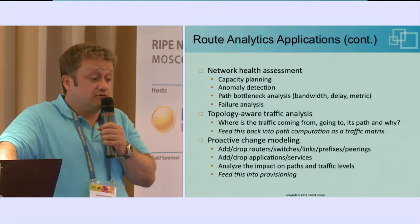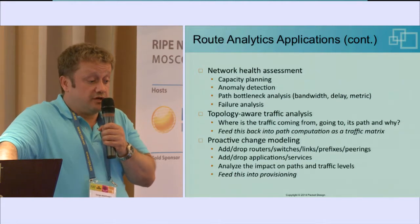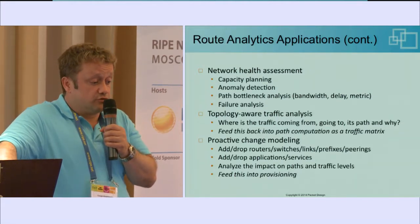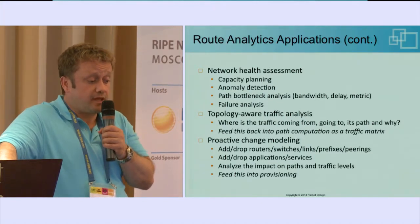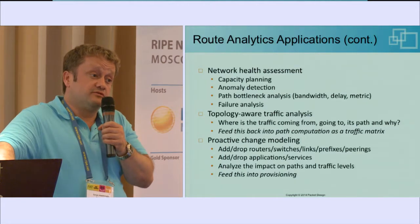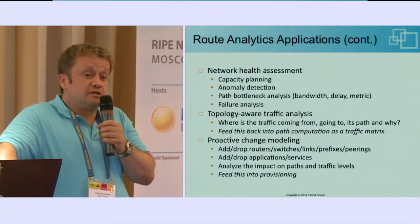You can tie this with flow data like NetFlow for topology-aware traffic analysis, which is useful for BGP peering analysis. In addition, because everything is driven from routing messages, you can change routing and see the impact. For example, you can take down a router for a planned maintenance and see what services will be impacted, what paths will be affected, and what the delays will be. It's very easy to do what-if planning because you can make up a routing message, run it through the same engine, and it will report the impact as if the link were actually down.